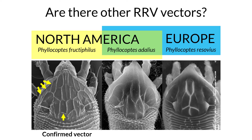Symptoms of rose rosette are quite characteristic. They include rapid elongation of shoots that remain red in color for a prolonged time, and very characteristic brooming with excessive thorniness.